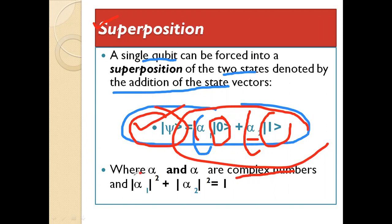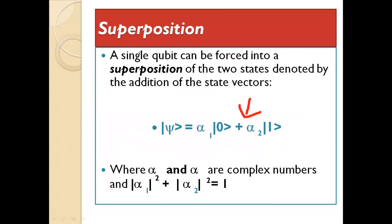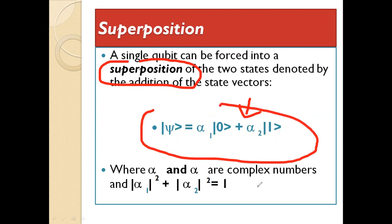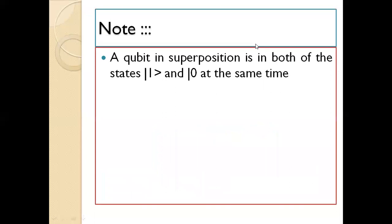Alpha-one and alpha-two are complex numbers and they satisfy the equation: alpha-one squared plus alpha-two squared equals one. This equation represents superposition. So a single qubit can be forced into a superposition of two states under the condition that alpha-one squared plus alpha-two squared equals one. Note that a qubit in superposition is in both the excited state and the ground state at the same time.